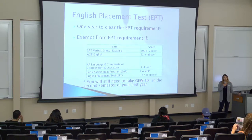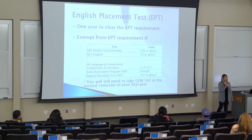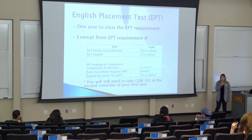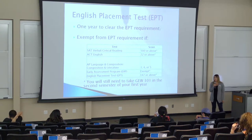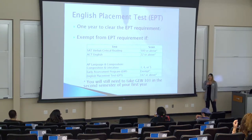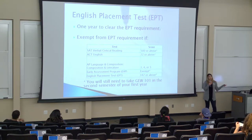For those of you who cleared the EPT requirement, you're not required to take GW 101 in the fall, but you are required to take it in the spring of 2018. So if you see on your TAGs 'take GW in spring,' it's because GW is a college requirement. Those who are not proficient take it in the fall; those who are proficient take it in the spring.